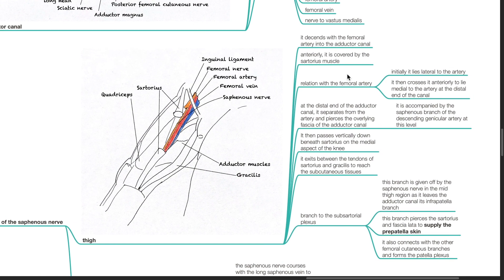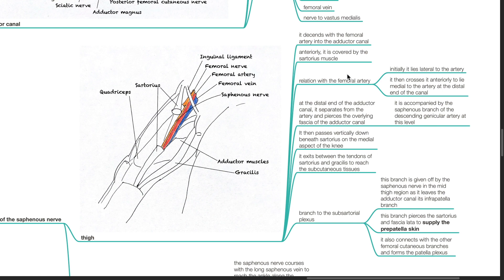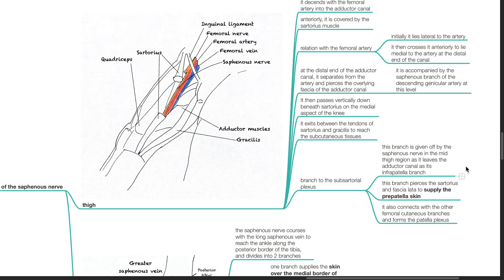Course of the saphenous nerve: in the thigh, it descends with the femoral artery into the adductor canal, covered anteriorly by the sartorius muscle. Initially it lies lateral to the artery, then crosses it anteriorly to lie medial to the femoral artery at the distal end of the adductor canal. At the distal end, it separates from the artery, pierces the overlying fascia, and is accompanied by the saphenous branch of the descending genicular artery. It then passes beneath the sartorius on the medial aspect of the knee, exits between the tendons of the sartorius and gracilis, and branches to the subsartorial plexus. The infrapatellar branch is given off in the mid-thigh region, piercing the sartorius and fascia lata to supply the prepatellar skin and connecting with other femoral cutaneous branches to form the patellar plexus.